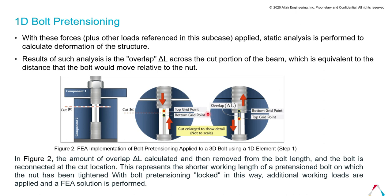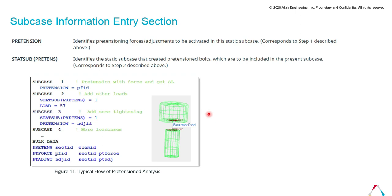Additional working loads are also applied on the FEA model and the FEA solution is performed. For the subcase information entry, 'PRETENSION' identifies the pretensioning force or adjustment to be activated in the static subcase. 'STATSUB(PRETENSION)' identifies the static subcase that creates the pretension bolts to include in the present subcase. In nonlinear path-dependent problems, the sequencing of pretension can be combined with the continuation of a nonlinear subcase using CNT and LSUB along with STATSUB(PRETENSION). This controls the sequence of pretension, while CNT and LSUB control the sequence of nonlinear loading scenarios.